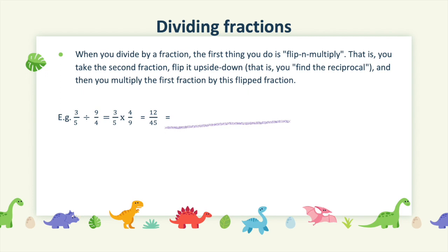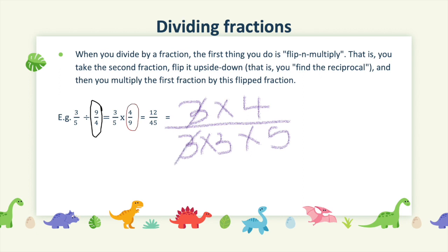Dividing fractions is just as easy as multiplying them — there's just one extra step. When you divide by a fraction, the first thing you do is flip and multiply. That is, you take the second fraction, flip it upside down, and then multiply the first fraction by this flipped fraction. For example: 3 over 5 divided by 9 out of 4. The first step is to convert this to multiplication by flipping the second fraction, 9 over 4, to get 4 out of 9. Then proceed with the simple multiplication to give us 12 out of 45. Afterwards, reduce the fraction by canceling off duplicated factors. When we do that, our answer is 4 out of 15.